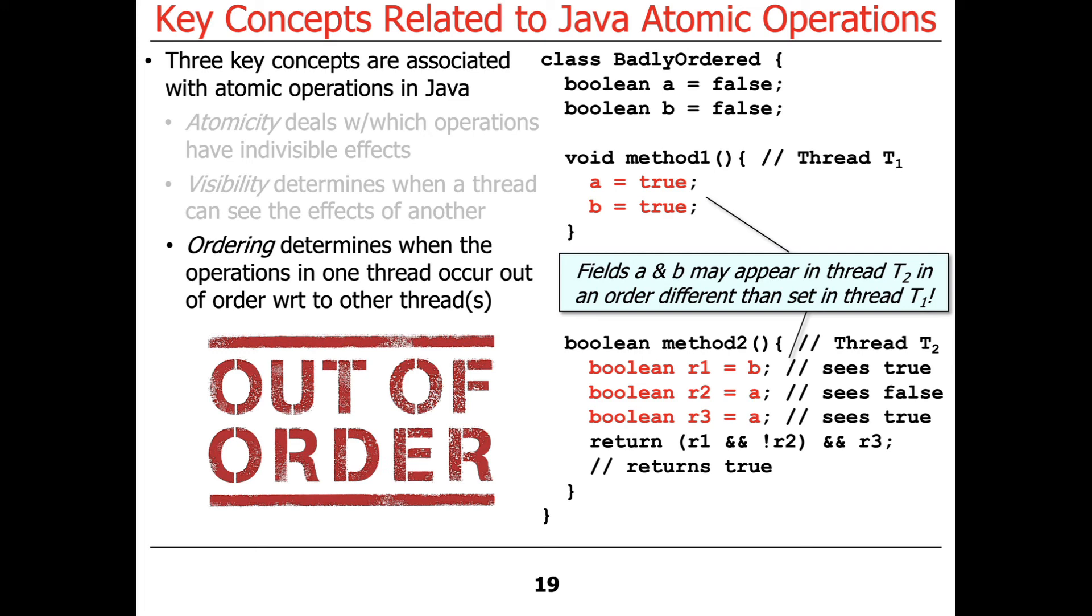And so you really don't know what the results of this are going to be because it's non-deterministic when the ordering of these values will be percolated through the memory system. So even though A is set to true and then B is set to true, if we read B, we could get true, but A might still be false. Now that seems really weird, right?